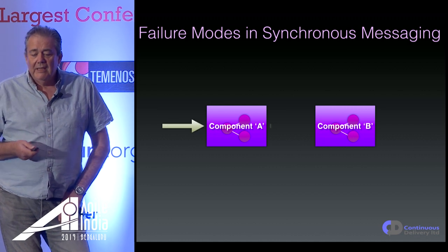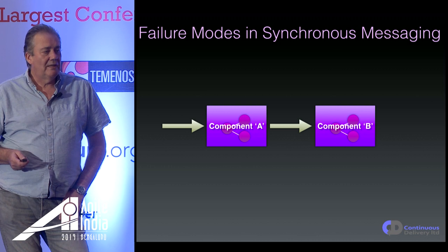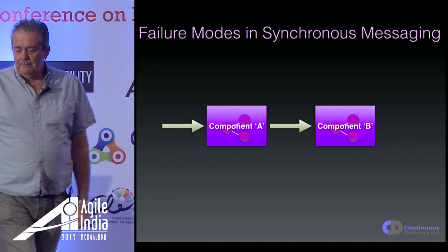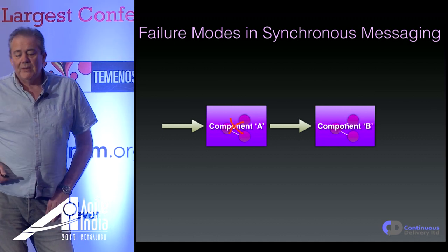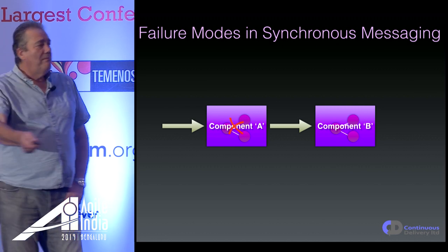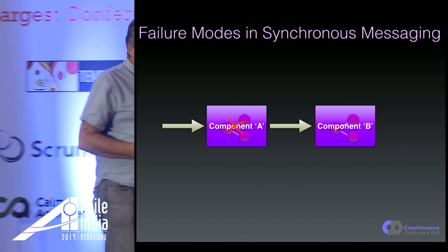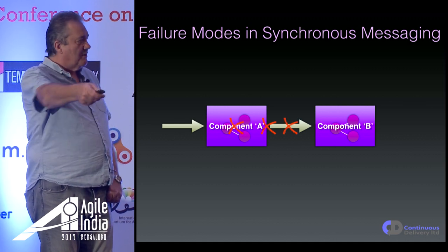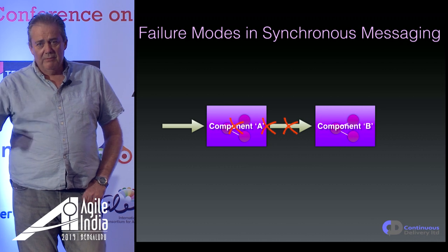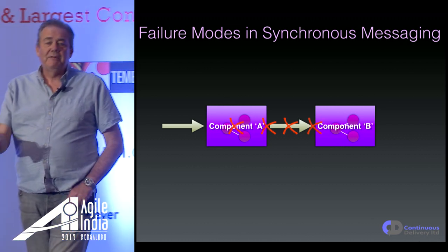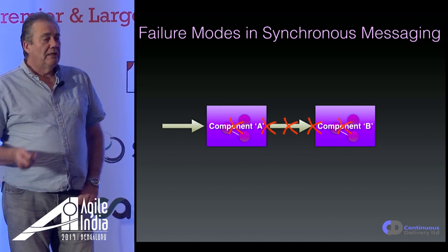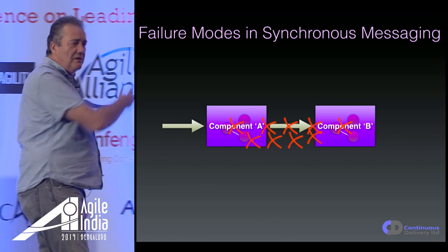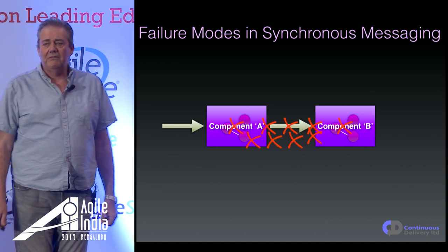Here's one example. Let's imagine we've got two components communicating with each other. Something triggers component A and that means it talks to component B. There are a number of places where that conversation can go wrong: a bug in component A, a problem establishing the connection to component B, dropping bytes in the communication, a problem at the component B end, a bug in component B, and the same set of failures on the return journey. In a distributed system, all of those are points of failure.